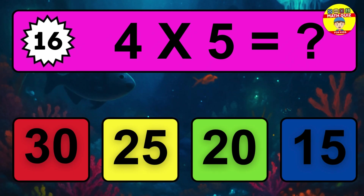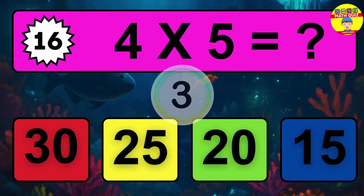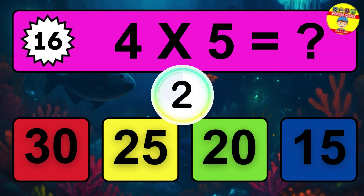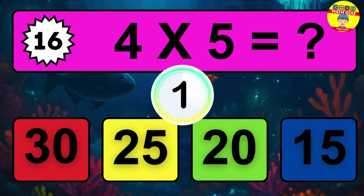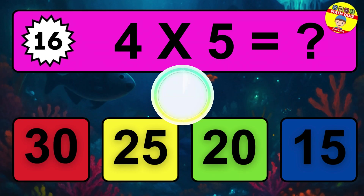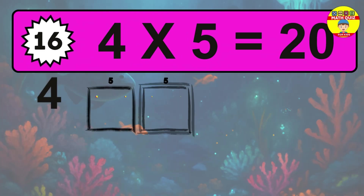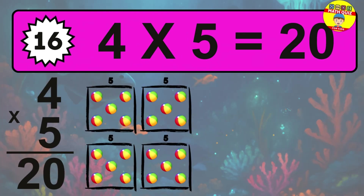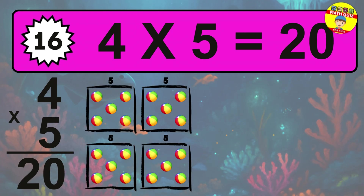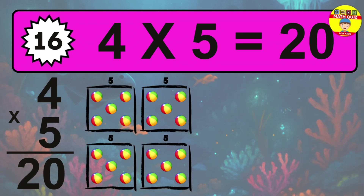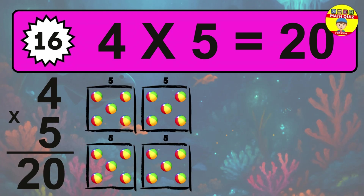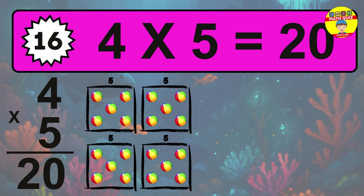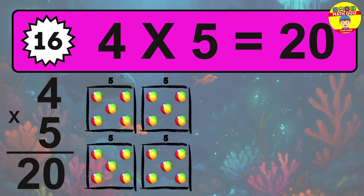Question 16. 4 times 5 equals what? The answer is 4 times 5 is 20. To calculate, we have four groups with five balls each one. So how many balls do we have? 20 balls.